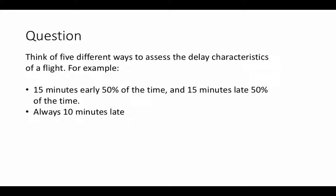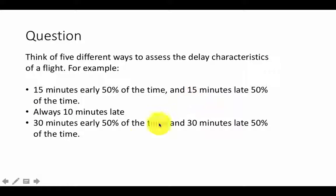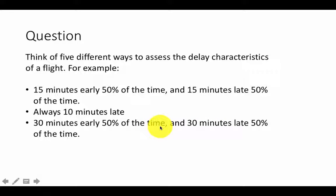On the other hand, you may have flights which are always 10 minutes late. The average delay for these flights will be 10 minutes, so in average terms these flights are worse. But you may prefer them because you know if there's a delay, it's restricted to 10 minutes, as opposed to a possible 15-minute delay. Just going by the average alone may not be enough — you have to think about variability. You could also have a flight where the average is 0 because 50% of the time it's 30 minutes early and 50% of the time it's 30 minutes late.